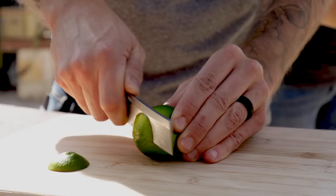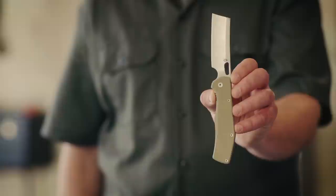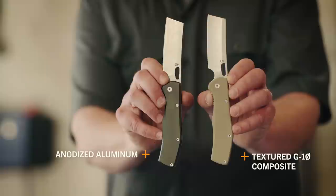7CR stainless steel is tough and resists corrosion. The Flatiron is available in desert tan textured G10 composite or gray anodized aluminum.